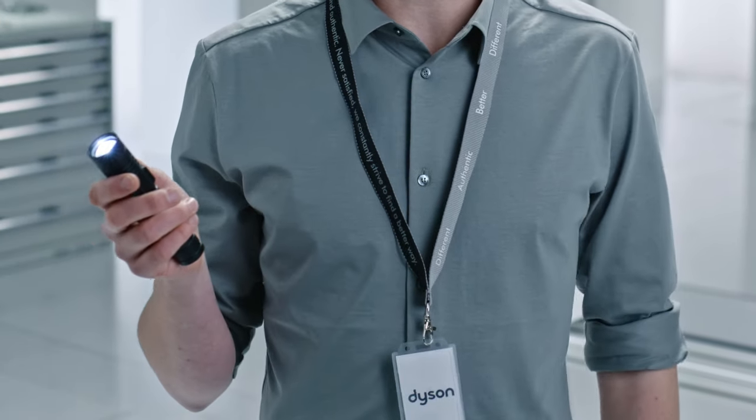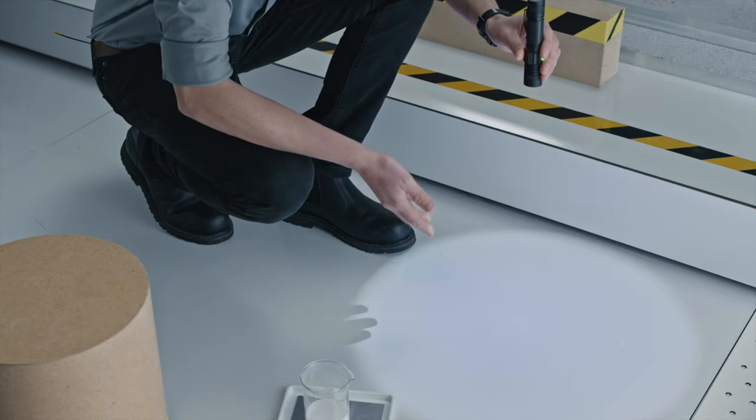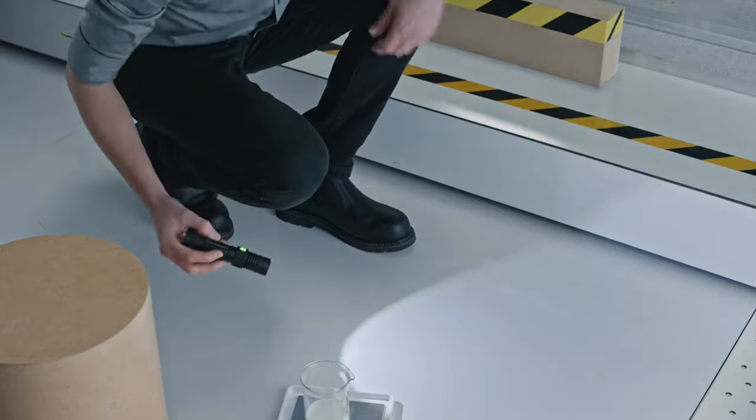Some vacuums use LED light to see hidden dust. But all that does is light everything, the dust and the surface. Changing the angle helps, but it still lights up the surface, so it's difficult to make out what's there.